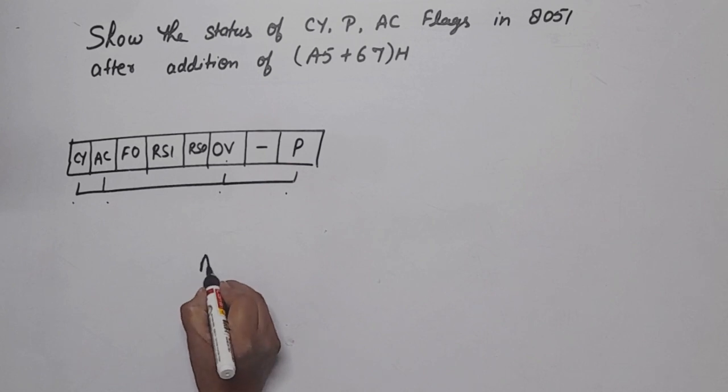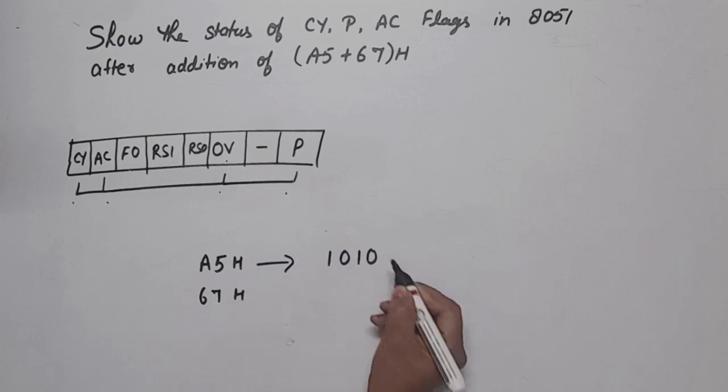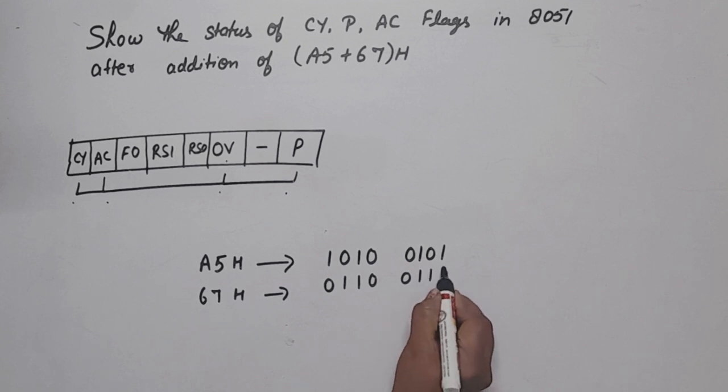Now, our first number is A5H, second number is 67H. A5 in binary is 1010 0101. 67H in binary is 0110 0111. Now let's add.